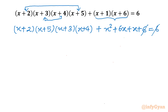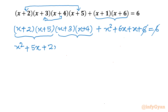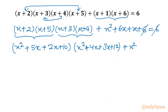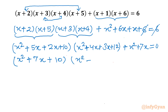We can cancel the two 6s. Now I will take the product of these two brackets. So we get x² + 5x + 2x + 10 for the first bracket, and x² + 4x + 3x + 12 for the second bracket. This gives us x² + 7x + 10 and x² + 7x + 12.